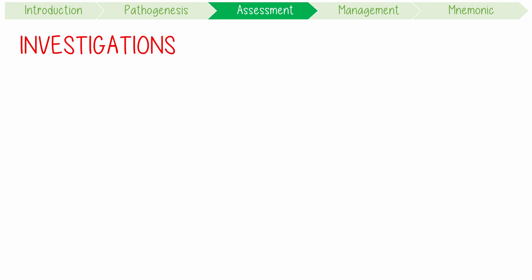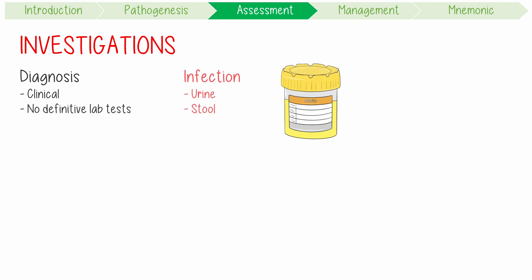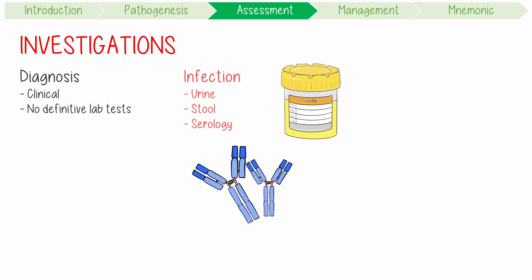When investigating reactive arthritis, remember that the diagnosis is a clinical one with no definitively diagnostic laboratory test or radiologic finding. With that being said, you can still consider testing for evidence of a recent infection. For example, urine or stool cultures or PCR might yield evidence of Yersinia or Chlamydia-induced disease. Serologic evidence of exposure to a causative organism is usually nonspecific and probably of questionable utility.